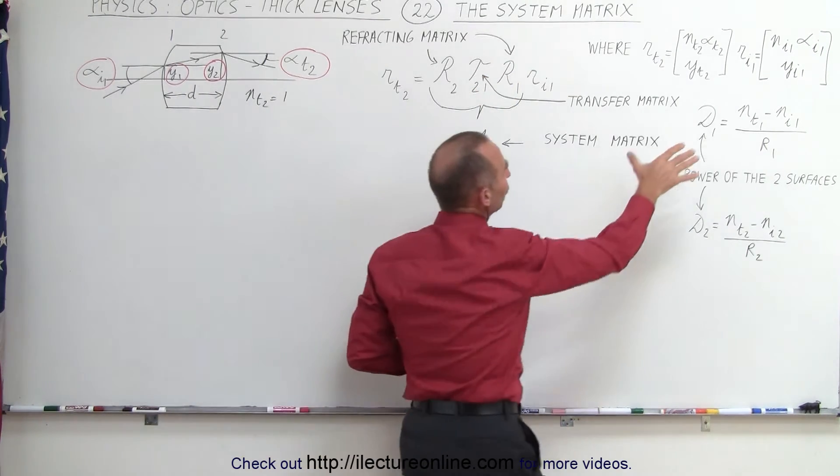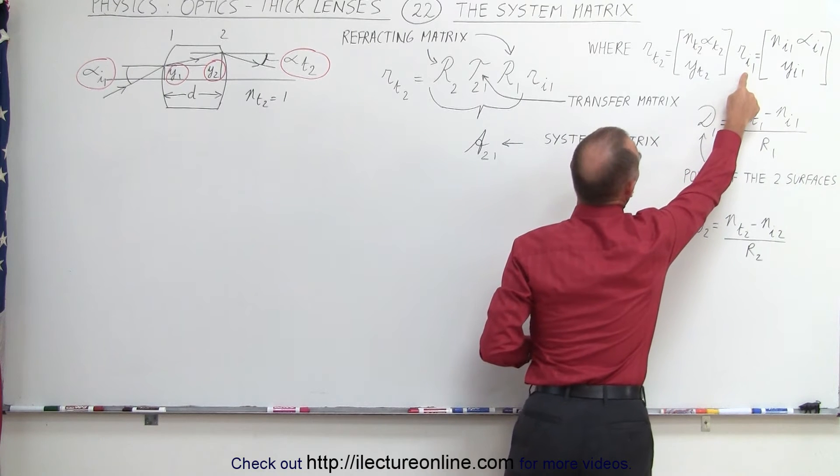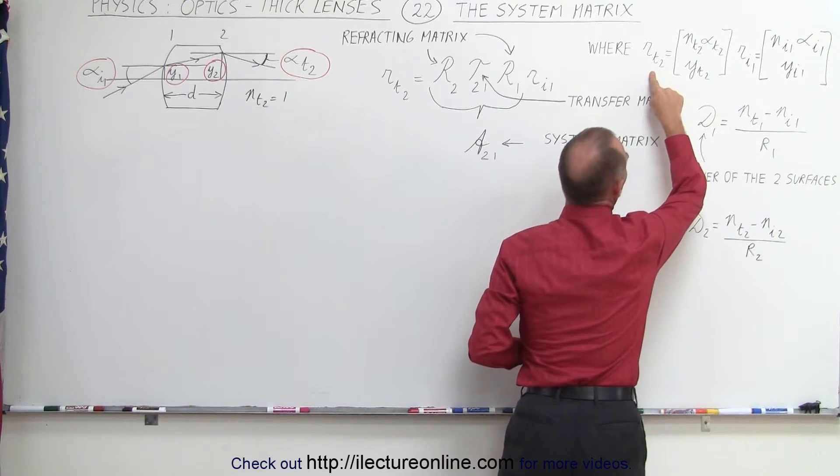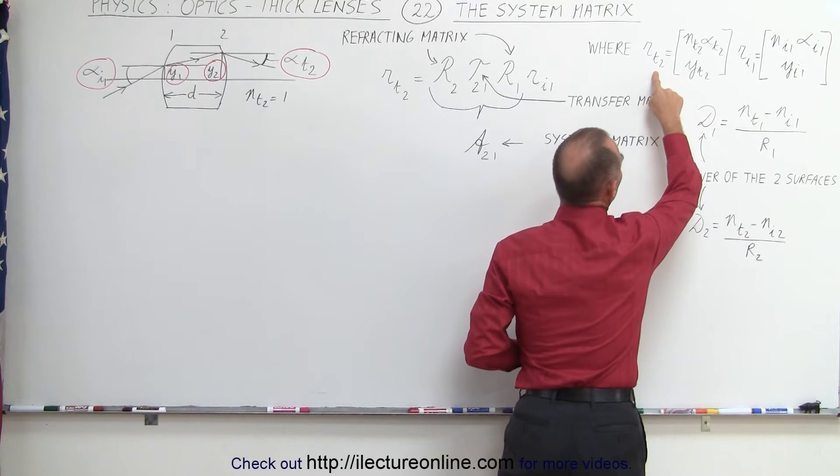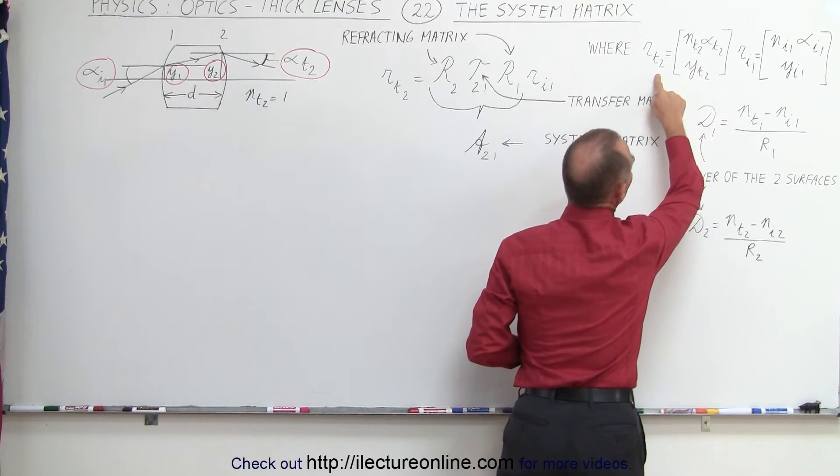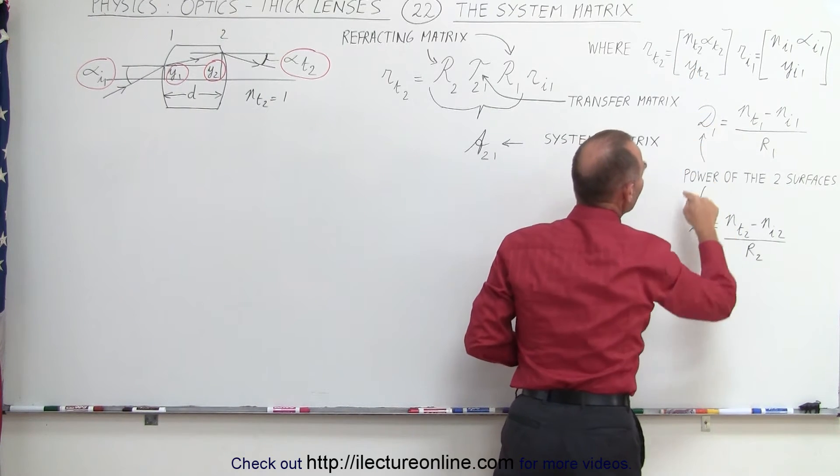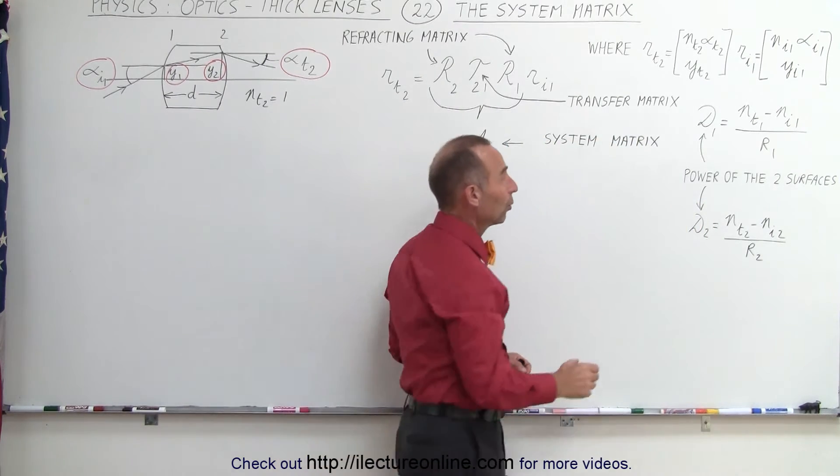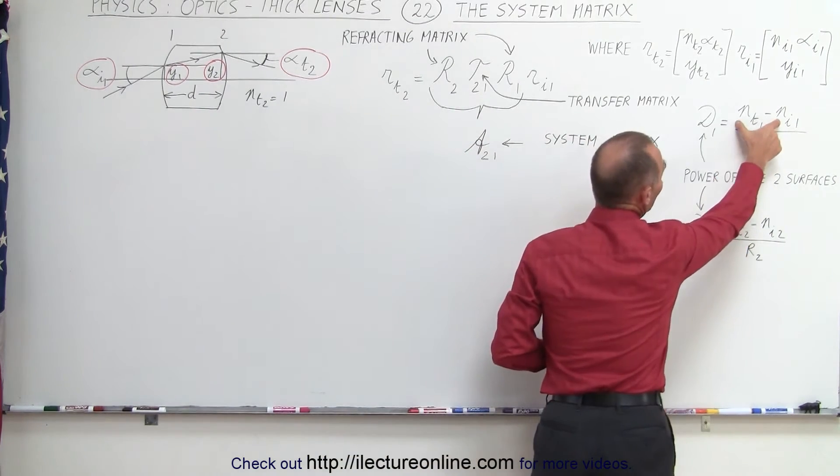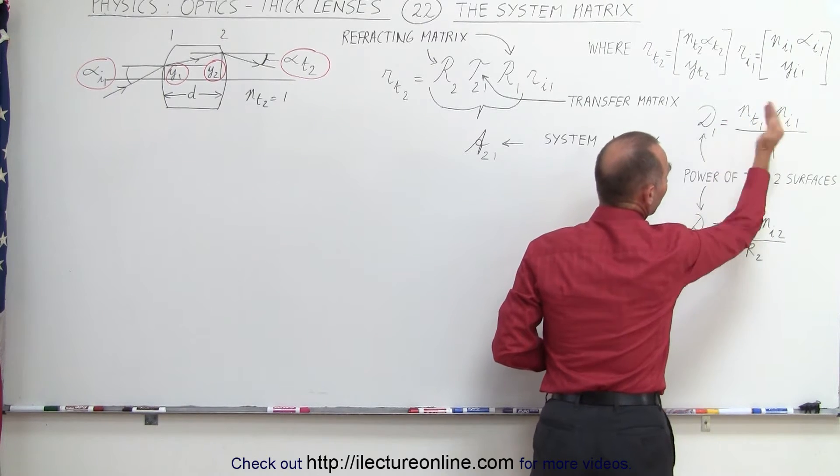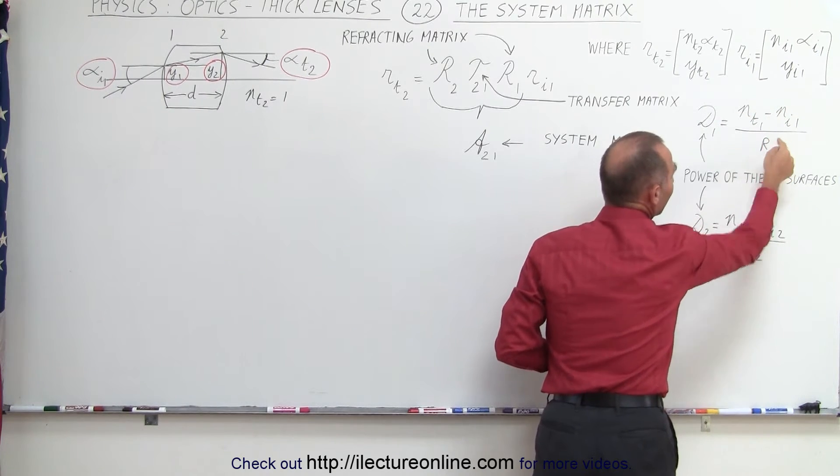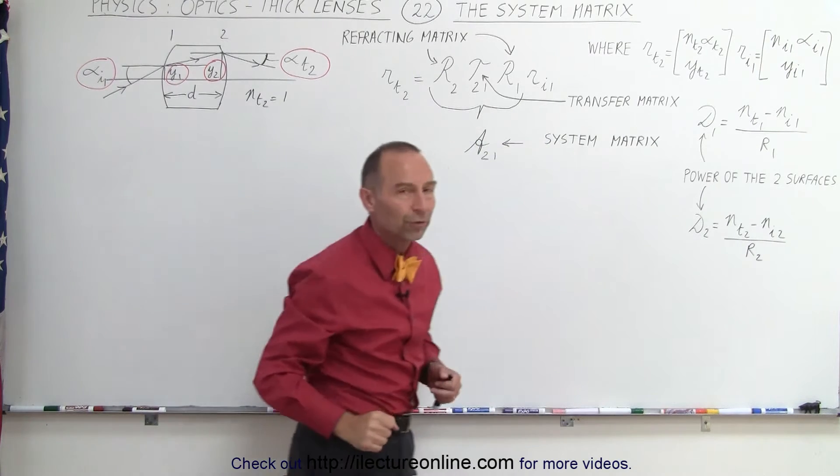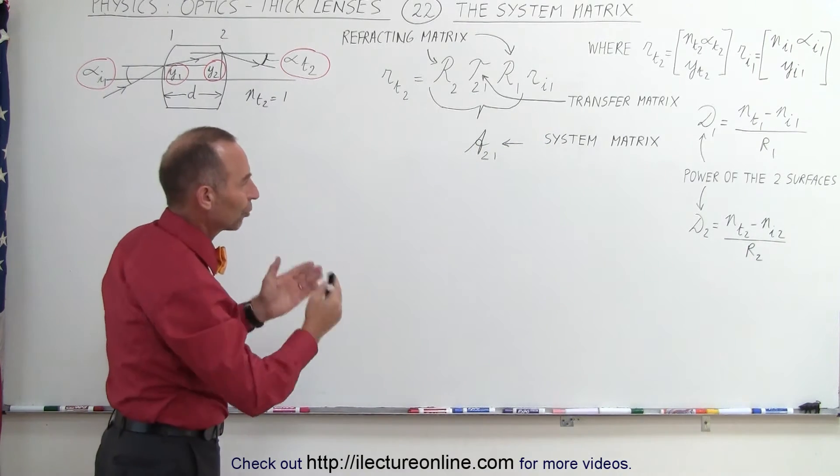Here we have the definitions of the rays as they enter the lens and the rays that transitions across the boundary or transmits on the other side of the second boundary. And D1 and D2 are defined as the power of the two surfaces, which is equal to the differences of the indices of refraction on both sides of the boundary divided by the radius of curvature of the surface or of the boundary.